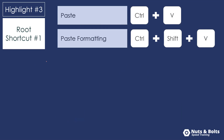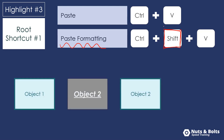The third highlight is that Control V to paste is the root shortcut for the paste formatting shortcut — all you need to do is add the Shift key. So Control Shift V pastes formatting you've already copied. For example, if we have an object and we have no idea how it's formatted, we can copy its formatting using Control Shift C and then Control Shift V to paste it so our object is perfectly formatted without having to manually format ourselves.